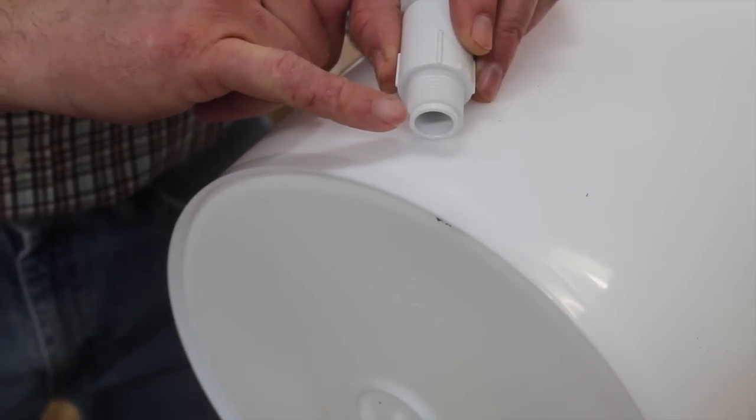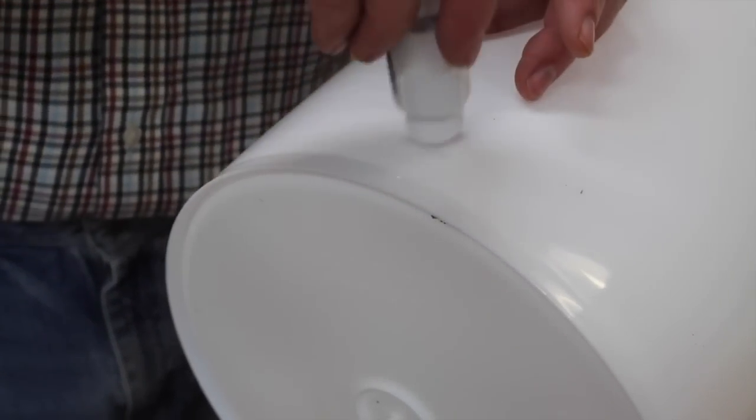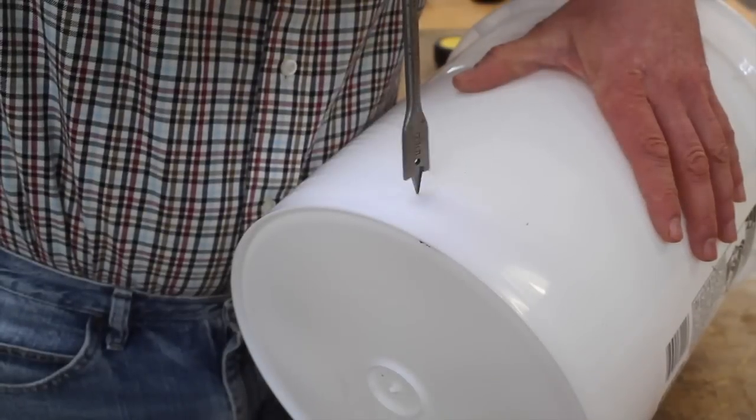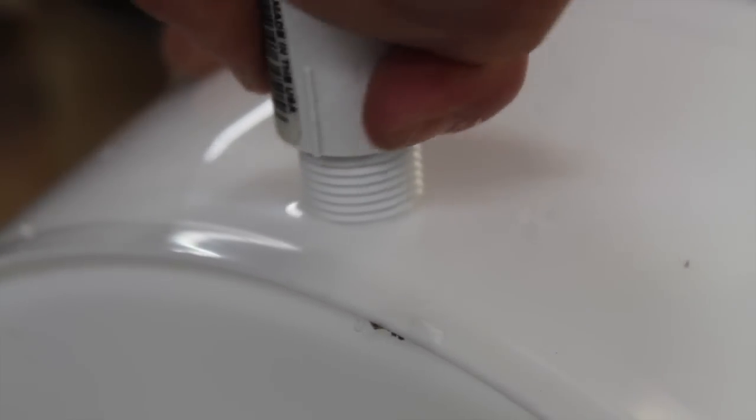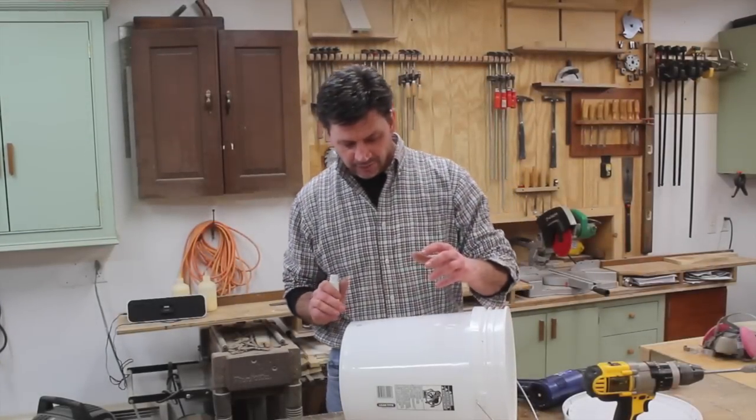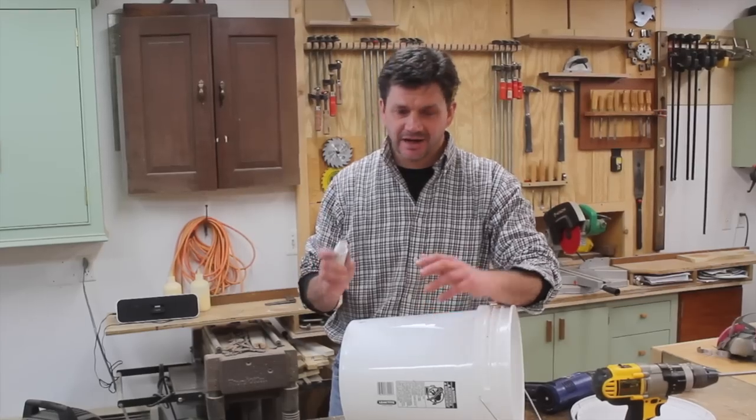The threads measure three-quarters of an inch, so I'm going to drill a five-eighths of an inch hole with the idea that I'll be able to tap the threads into the bucket. It turns out that the hole's a little small. I don't have an eleven-sixteenths drill bit, which is surprising, but that would have been the right size hole to drill.